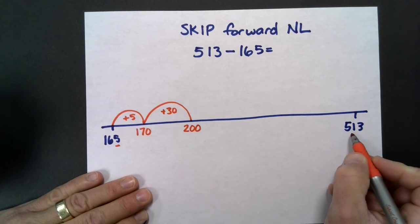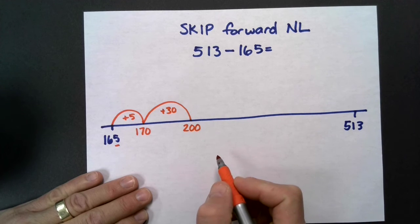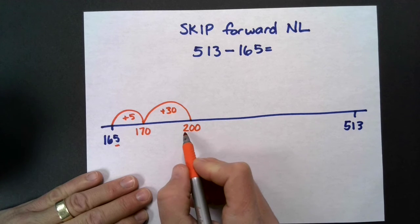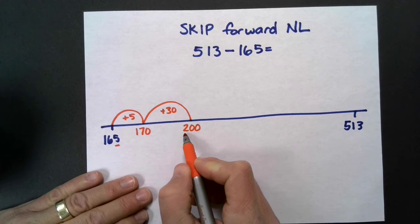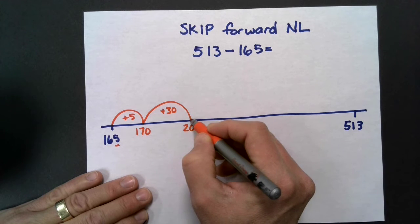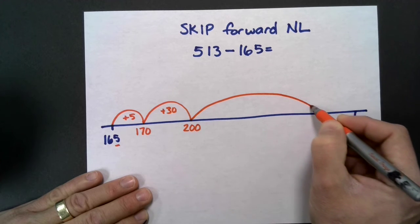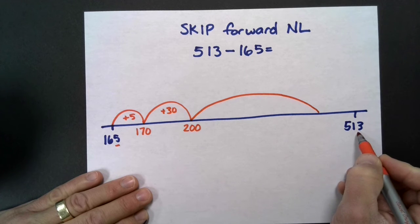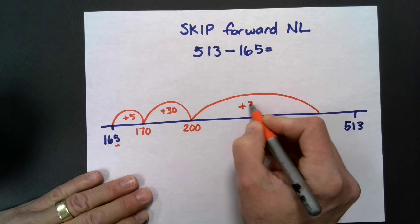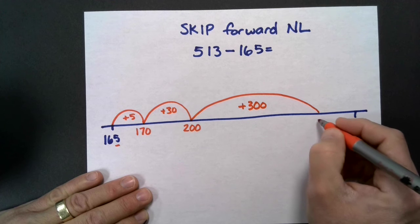Now I'm reminding myself I need to get all the way to 500. I could skip by hundreds or skip multiple hundreds at one time. I know that if I add 300 to 200, I'm going to be at 500. I'm going to make a big jump because I'm getting really close to my number. So 200 plus 300 is 500.